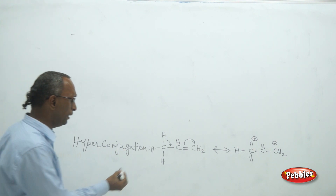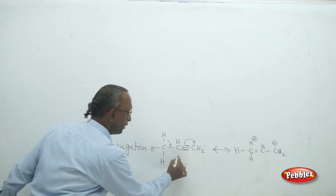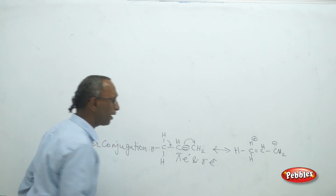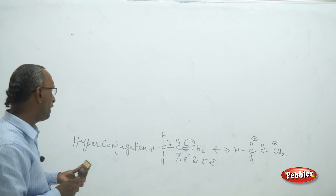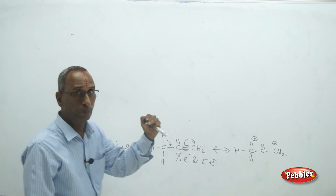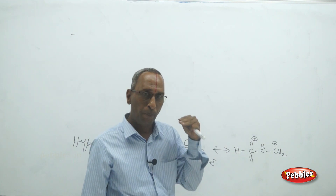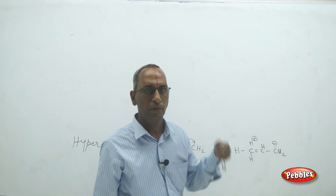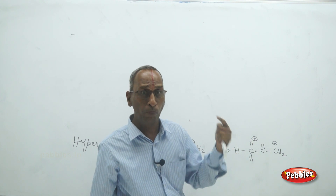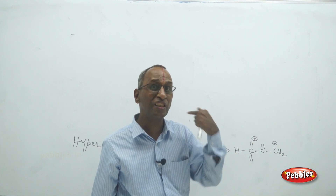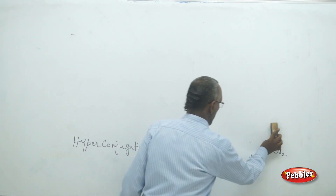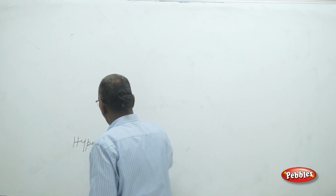Hyperconjugation involves the shifting of both pi electrons and sigma electrons in open-chain structures. 'Hyper' means above — normally we expect only pi electrons to shift, but here sigma electrons are also involved. The more hyperconjugating structures a compound has, the more stable it is. Resonance and hyperconjugation are both important in assessing the stability of compounds.